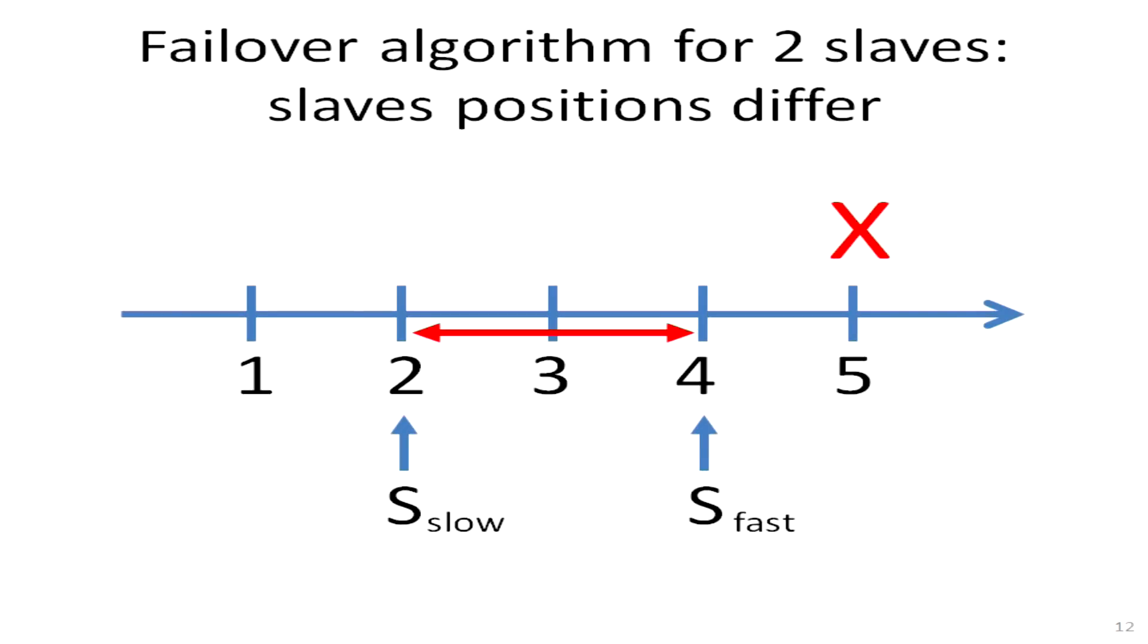If their positions differ, then we need to make them equal. And again there are two alternatives to do that. First of all, we can try to make them both equal to the slow slave. To do that we need to undo changes 3 and 4 from the fast slave. And unfortunately MySQL doesn't have such a feature as an undo of some arbitrary change. So this is simply impossible.